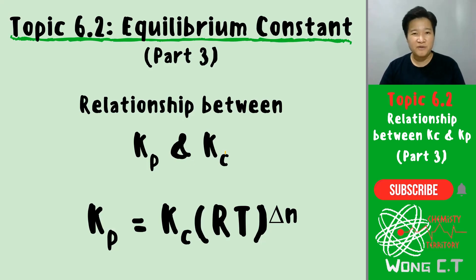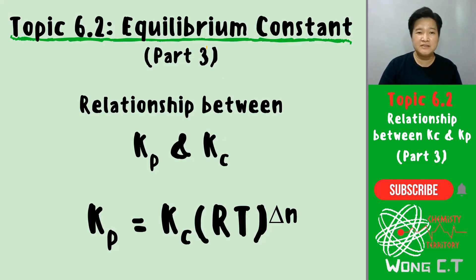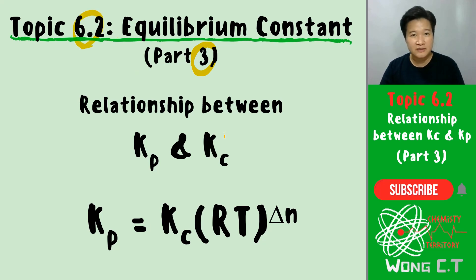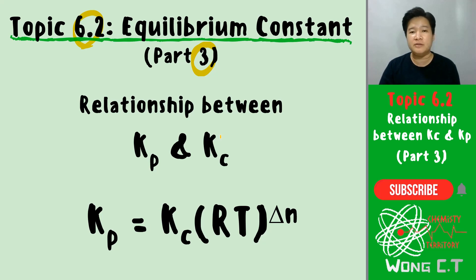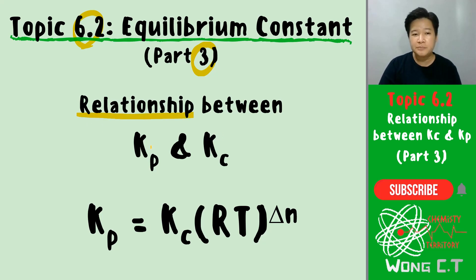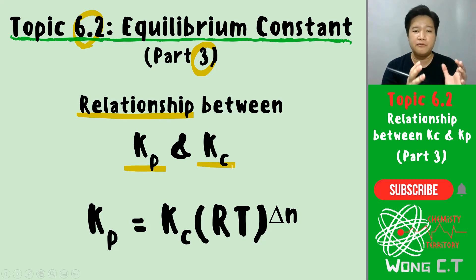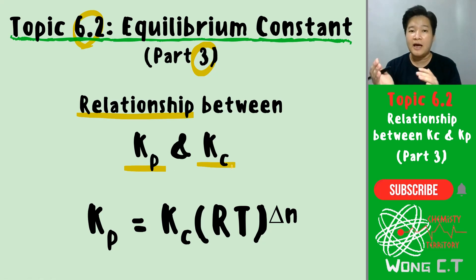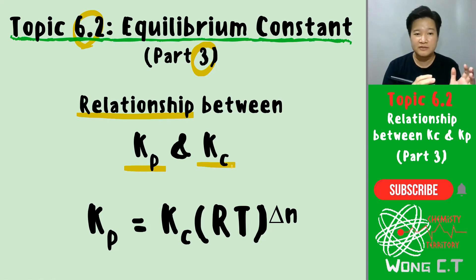Hi guys, welcome back to Wong Chemistry channel. This video is Part 3 of your 6.2 Equilibrium Constant. In this video, we are going to discuss something very simple — only one formula. It's the relationship between Kp and Kc. If you have your Kp value, we can change it to Kc and vice versa.